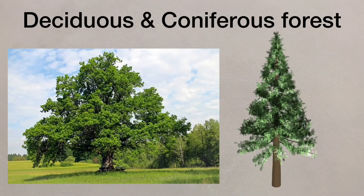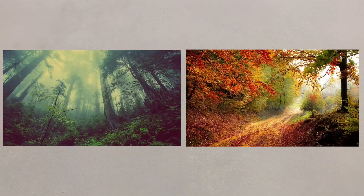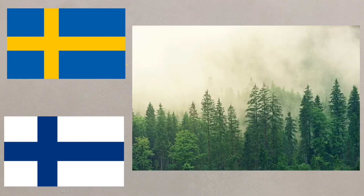Deciduous and coniferous forests can be found 50 to 60 degrees north of the equator, and the UK's natural vegetation is deciduous forest. Further north in places like Sweden and Finland you'll find coniferous forests because they are much better suited to the colder climates.